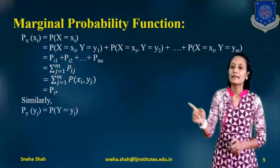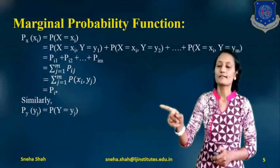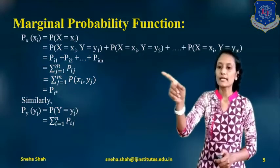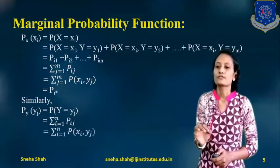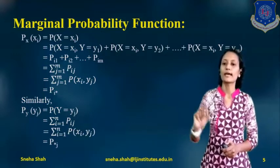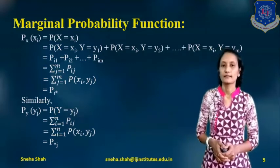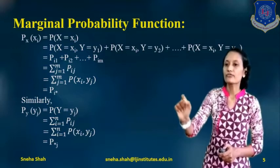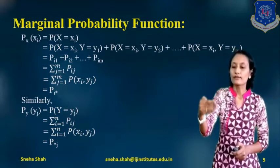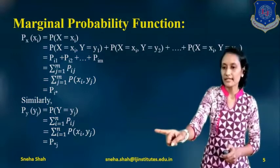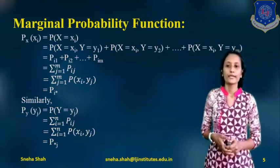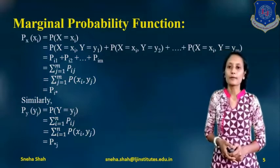Similarly, if we find p_Y(yj), its value is P(Y = yj), and it equals the summation over i from 1 to n of pij, written as p★j. The equation can also be represented as summation over i from 1 to n of P(xi, yj). So to find probability of x, we sum over all j (values of y); and to find probability of y, we sum over all i (values of x). This is how we find the marginal probability function.